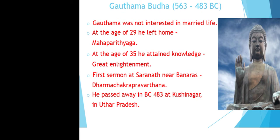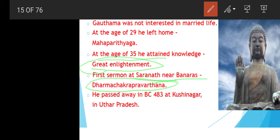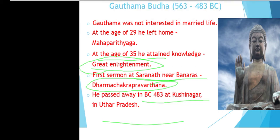Gautam Buddha was not interested in married life. At age 29, he left home — this event is known as the Maha Parityraga. At the age of 35, he attained great enlightenment — his soul merging with the divine. He gave his first sermon at Sarnath near Varanasi, an event called Dharmachakra Pravartana. He passed away in 483 BCE at Kushinagar in present-day Uttar Pradesh.